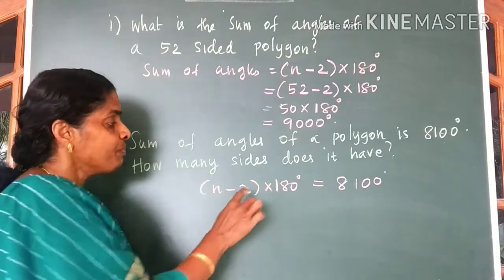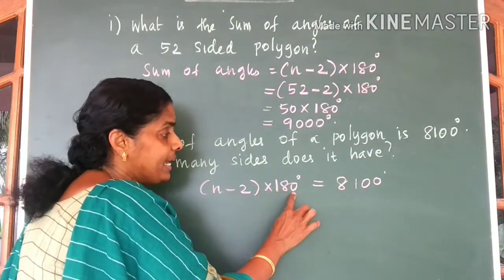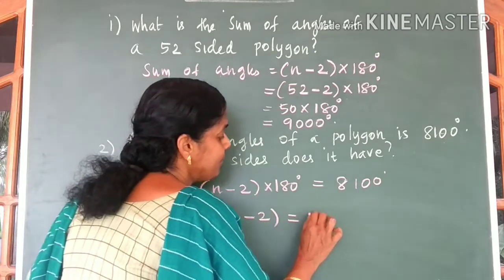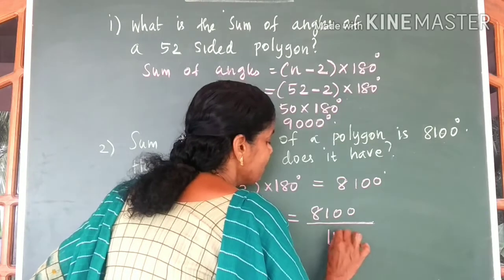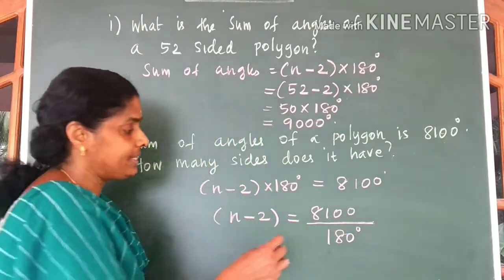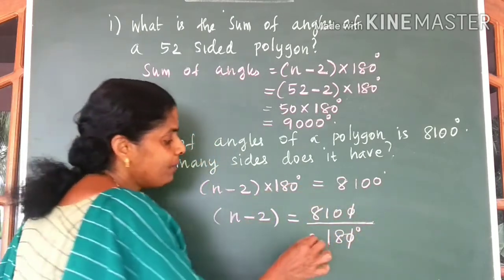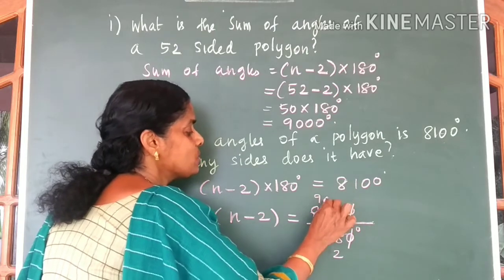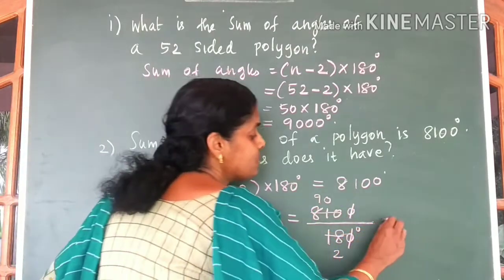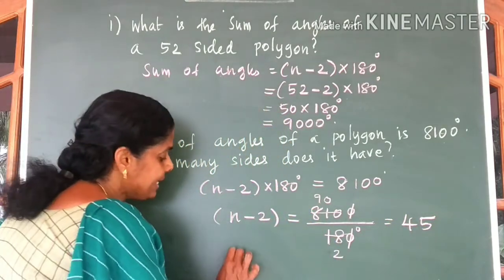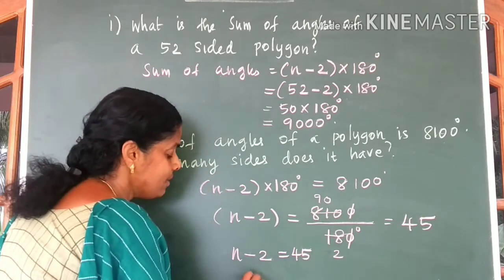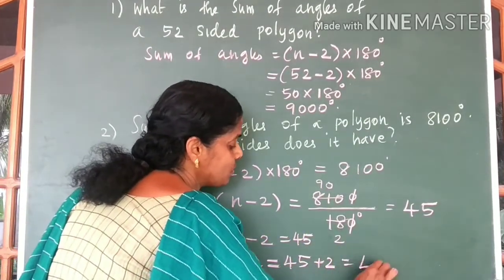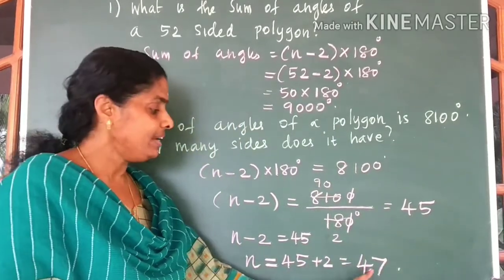In the next step, since 180 is multiplied, take it to the other side. So n minus 2 equals 8100 divided by 180. Cancelling the zeros and then dividing: 810 divided by 18 gives 90 divided by 2, which simplifies to 45. So n minus 2 equals 45, and therefore n equals 45 plus 2, which is 47. The number of sides of that polygon is 47.